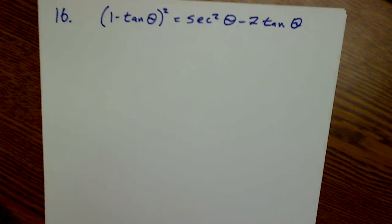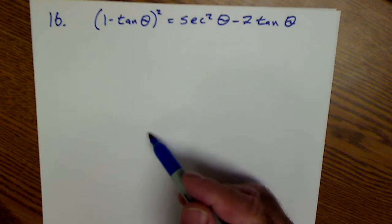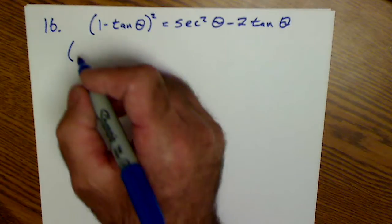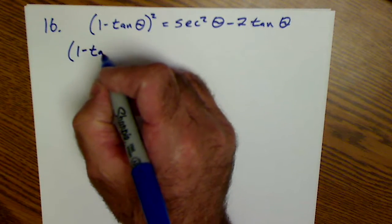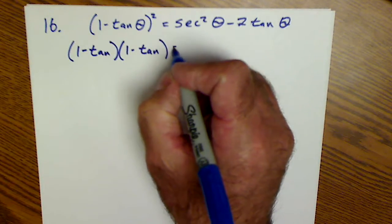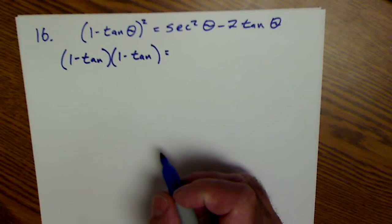Take a look at another one. This one right here is 1 minus tan of theta quantity squared. So that's the same thing as 1 minus tangent of theta times a quantity 1 minus tangent of theta. So I'm going to FOIL that out.